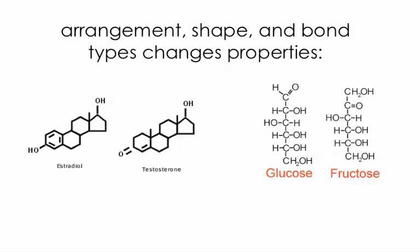If you change bonds around, you'll change the chemical properties. An example is estrogen and testosterone — very similar organic molecules, but you just change a few things and you make an entirely different hormone. The same with glucose and fructose: they have the same number of atoms, but you change the arrangement and you get a brand new sugar.